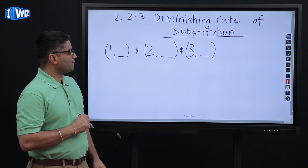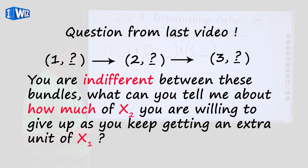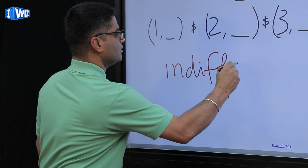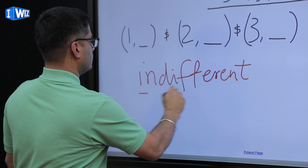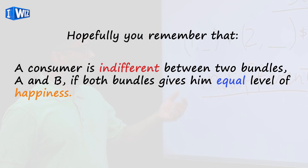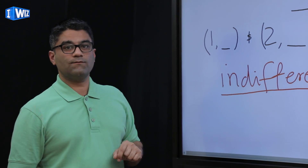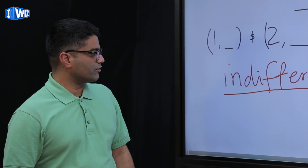Let me start with the question I left you with in the last class: as you keep getting an extra unit of X1, how much of X2 will you be willing to give up, as long as you are indifferent between these bundles? What we mean by indifferent is that you're going to be equally happy between these bundles. If you're not comfortable with the concept of indifferent bundles, go look at the video on substitution between goods, which should show up on the top right of your screen.